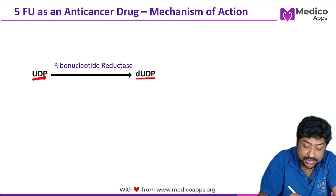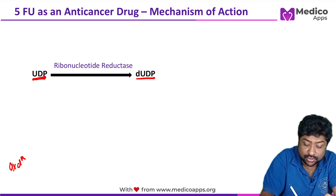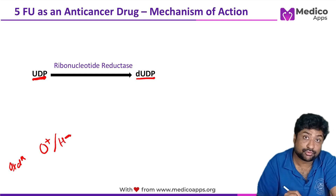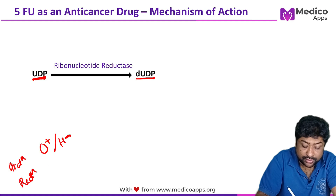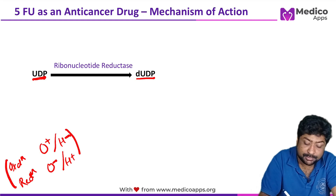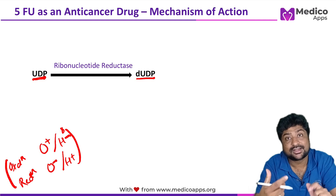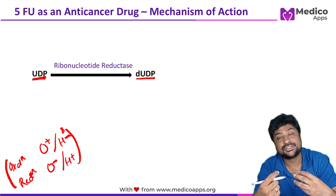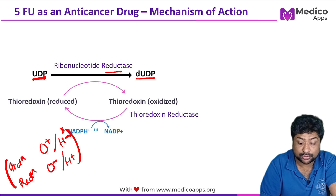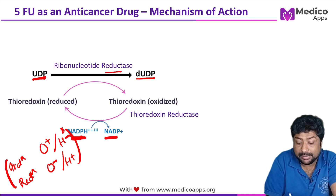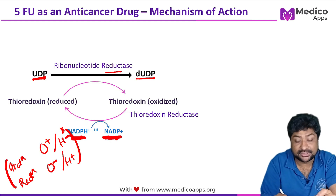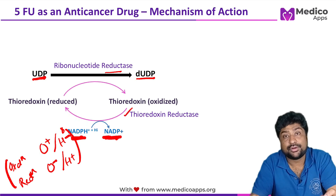Remember: oxidation means adding oxygen or removing hydrogen from a reaction; reduction means removing oxygen or adding hydrogen. Since reductase involves addition of hydrogen, that hydrogen comes from NADPH. So NADPH + H is converted into NADP⁺. Thioredoxin is the carrier, and the enzyme is thioredoxin reductase. This completes the UDP to dUDP reaction.